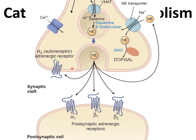The alpha-2 receptor here is a presynaptic autoreceptor, because it is involved in regulating norepinephrine release. Alpha-2 receptor activation inhibits the release of norepinephrine — this is how the autoreceptor prevents further release of norepinephrine.